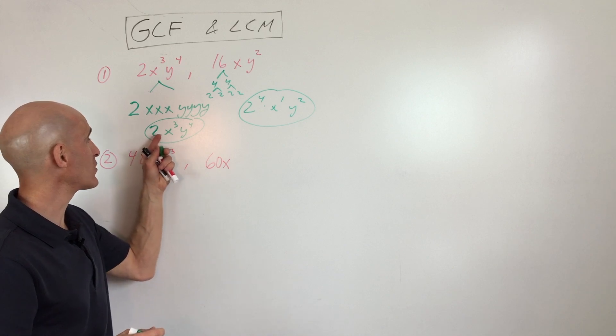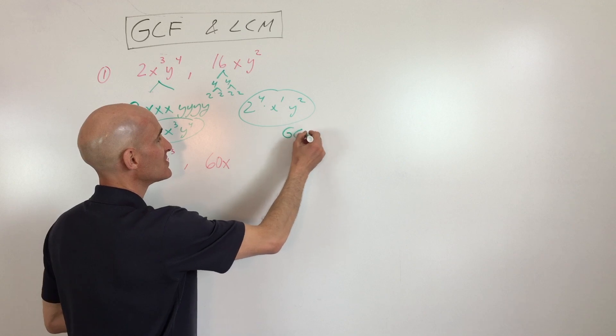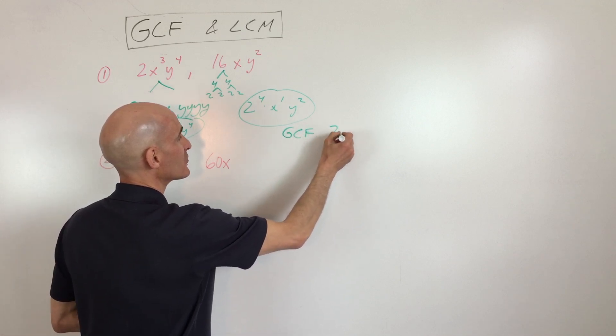So even though it's the greatest common factor, you want to take whatever occurs the least. So here we have 1 two, here we have 4 twos. Our greatest common factor, our GCF, is just going to start off with 2¹.